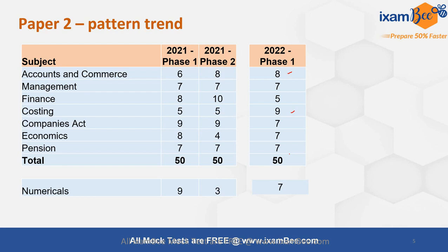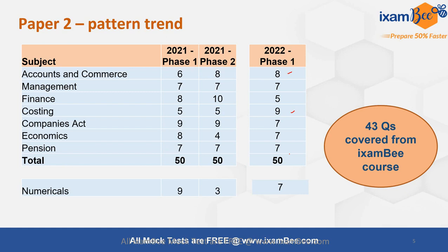I'm very happy to share that out of these 50 questions, 43 have been directly covered from the iExamB course — a very crisp course with short videos, PDF notes, and lots of practice questions at different levels: chapter level, section/subject level, and full exam level. This helps you prepare very holistically in a focused manner, making your preparation 50% faster.